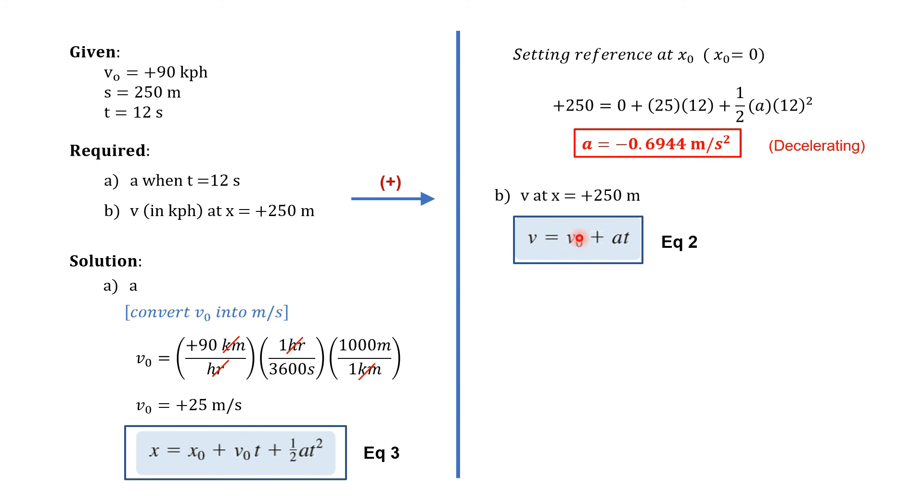This initial velocity already has a value of positive 25 meters per second and then the acceleration is already obtained and the time is already given. So if we just substitute the values, we can now solve the final velocity equal to positive 16.67 meters per second. Take note that the required final speed should be in kph.